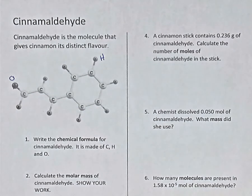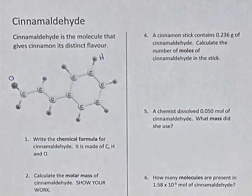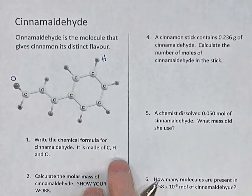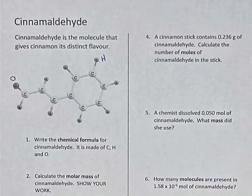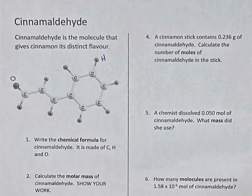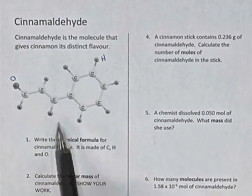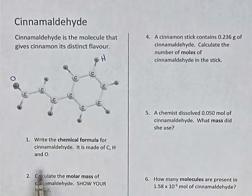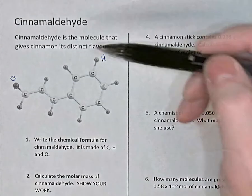The first question says write the chemical formula for cinnamaldehyde — it's made of carbon, hydrogen, and oxygen. When we write the formula, traditionally we put the elements in the order C, H, and O. For example, glucose is C6H12O6. So count the number of atoms of each element and then write the formula.